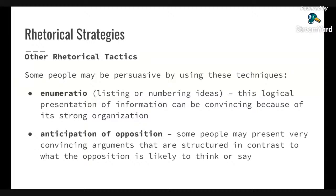Other rhetorical tactics: enumeratio is listing or numbering ideas. This is a logical presentation of information that can be convincing because of its strong organization. Just don't do it like Kevin's brother in Home Alone — he starts with 'number one,' then lists some things, then goes to 'B,' and just goes completely off track on enumerating his points.